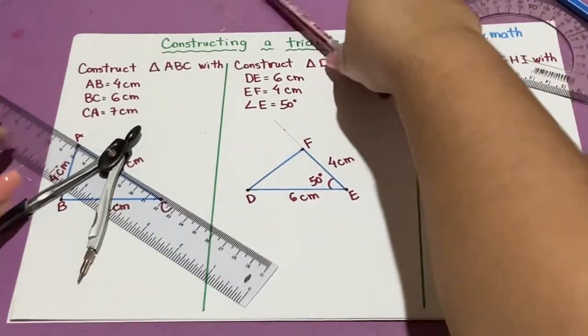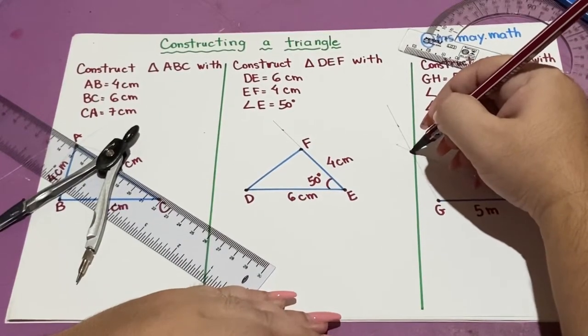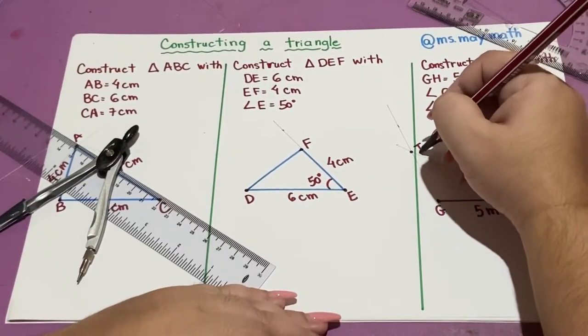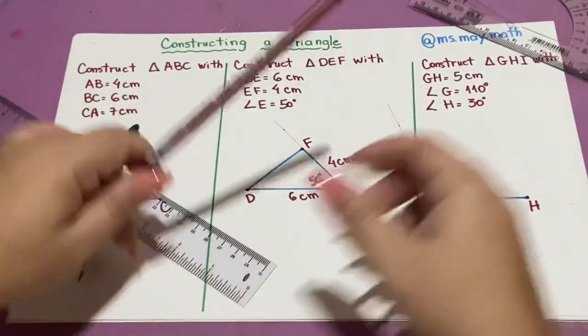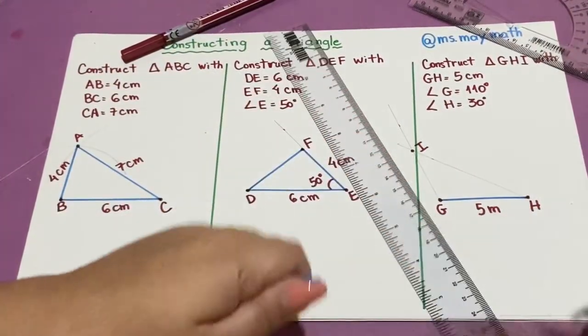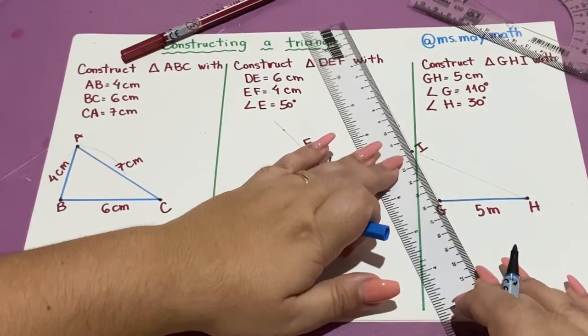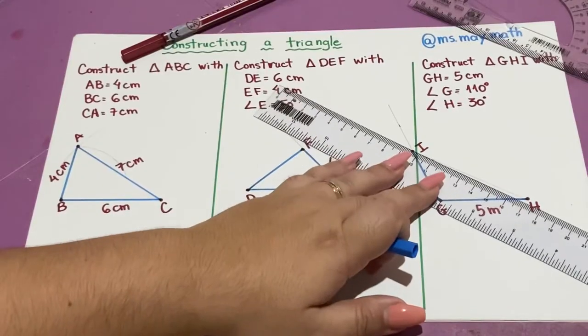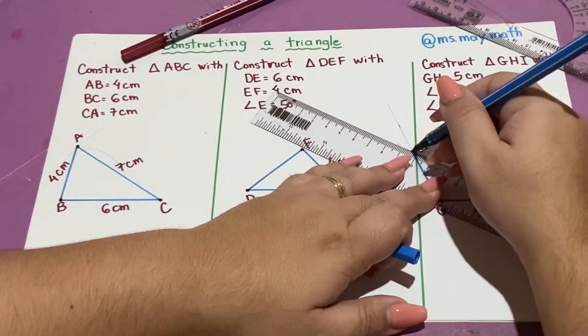This point where the two lines intersect will be my point I. The last step that I have to do is to join these points, this one and this one.